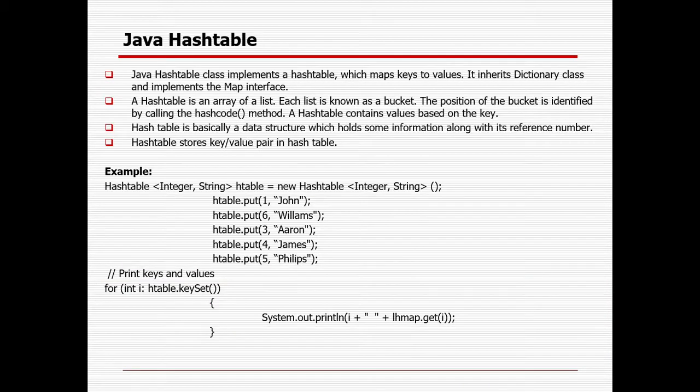What is a HashTable? The Java HashTable class implements a hash table which maps keys to values. It inherits the Dictionary class and implements the Map interface. A HashTable is an array of lists — each list in the array is known as a bucket. The position of the bucket is identified by calling the hashCode() method. A HashTable contains values based on the key.